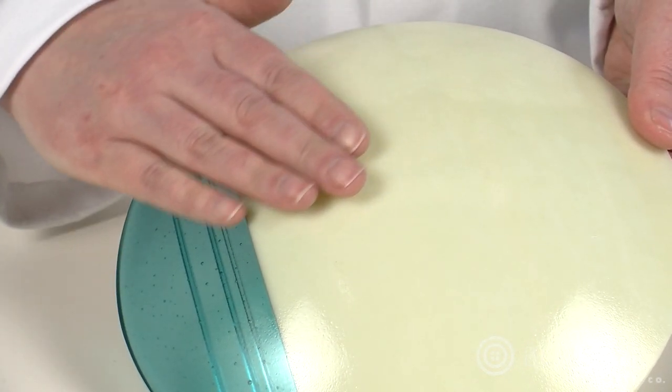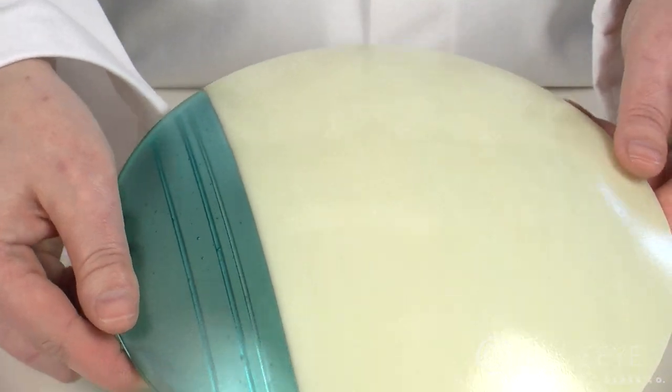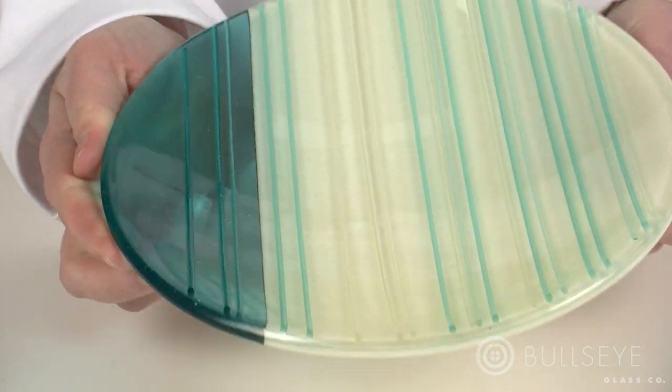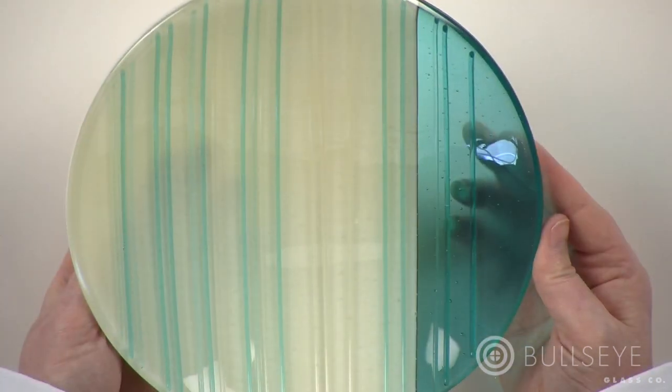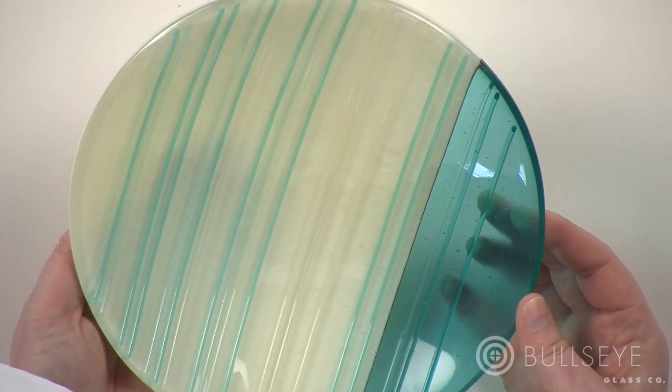Because slumping requires a cooler forming range, much texture from prior firings will remain. For example, shelf-side texture as well as surfaces that result from a tack fuse will be largely unchanged in a slump firing.